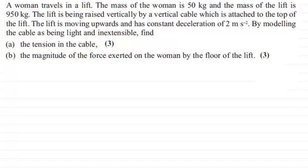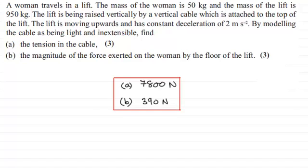Okay, welcome back then if you had a go. Well first of all let me just give you the numerical answers so you can just check them. For part A it was 7800 newtons for the tension in the cable, and then for the magnitude of the force exerted on the woman by the floor of the lift it was 390 newtons. Now if you didn't get these or just want to see how I went about working this out, I'll take you through my work solution.